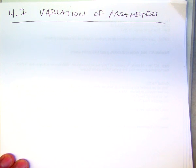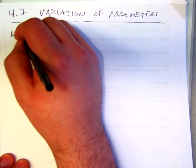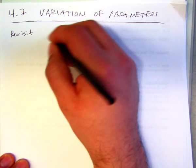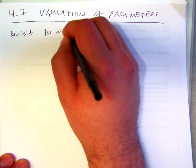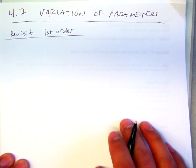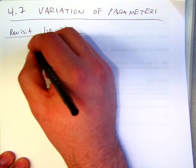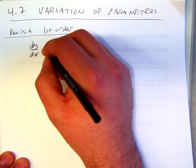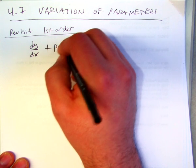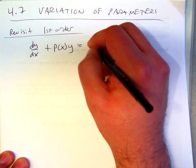Okay, so a quick revisit to first-order equations. So dy over dx plus p of x, y equals some function f of x.